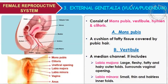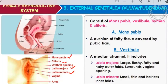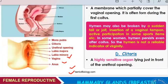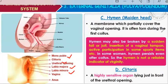A question about external genitalia: the hairy organs are the mons pubis and labia majora. These two are the hairy organs. The non-hairy organs are the labia minora and clitoris. The vestibule is the median channel.